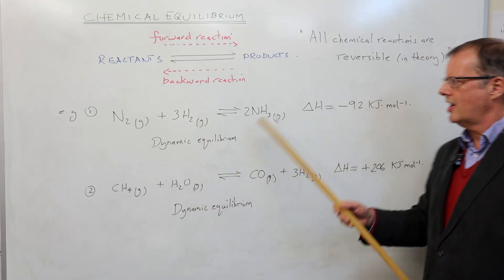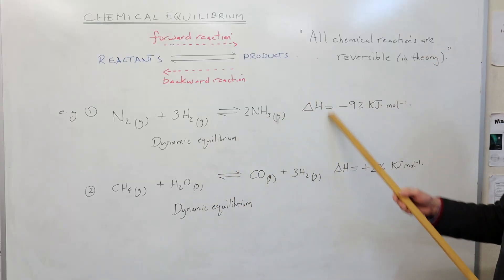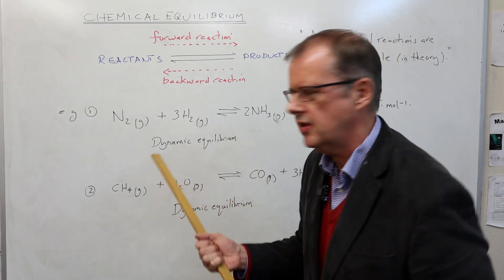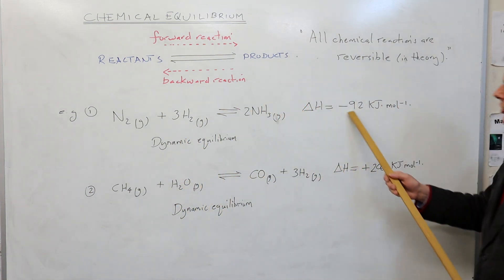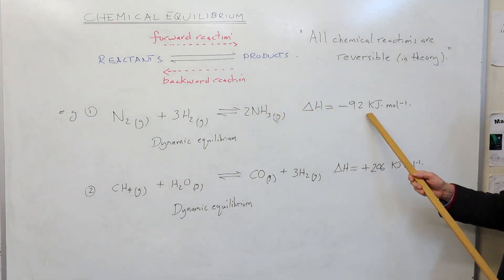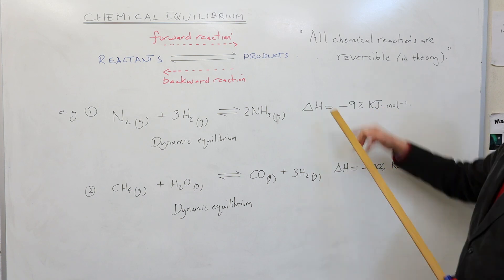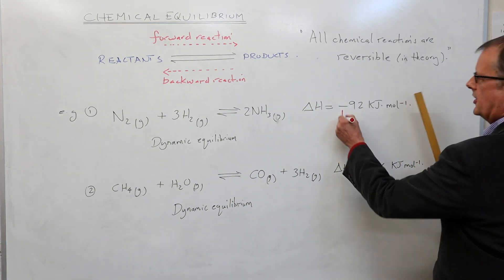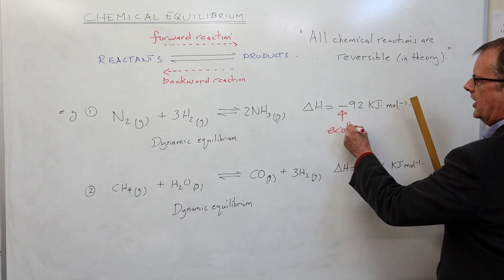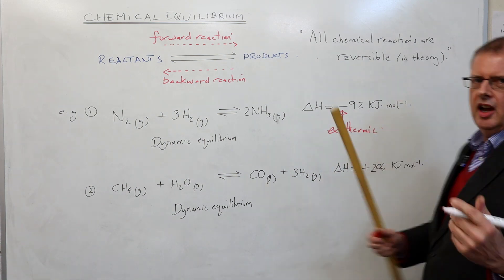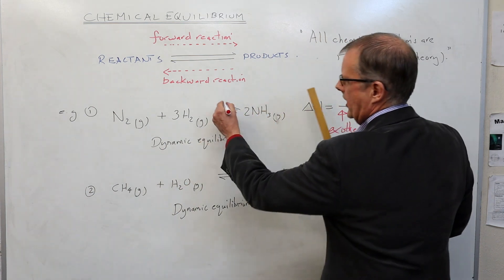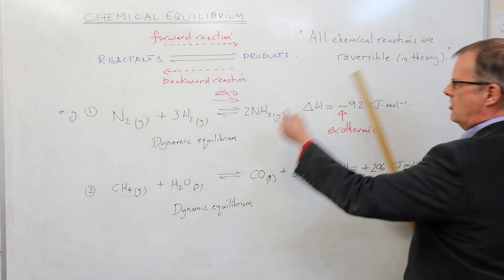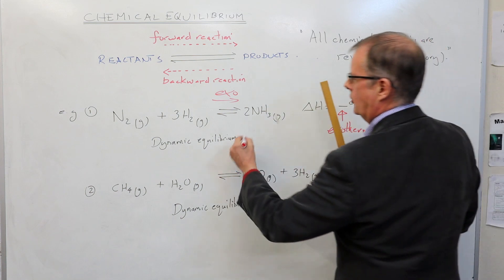I've got two examples here which are contrasting because they have different enthalpy changes. When I say delta H equals minus 92 kilojoules per mole, students recognise that the minus 92 means exothermic — a reaction that gets hot — and that refers to the forward reaction. It gives out 92 kilojoules of energy, and the backward reaction is a cooling-down endothermic reaction.